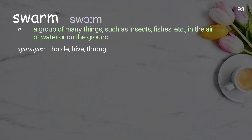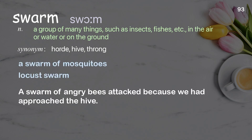Swarm: a group of many things, such as insects, fish, etc., in the air or water or on the ground. Examples: a swarm of mosquitoes, locust swarm. A swarm of angry bees attacked because we had approached the hive.